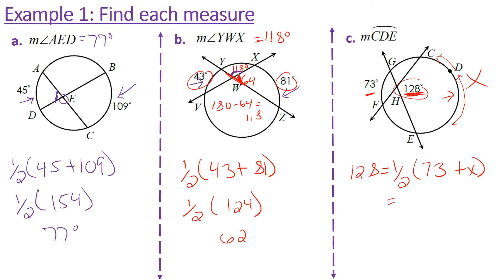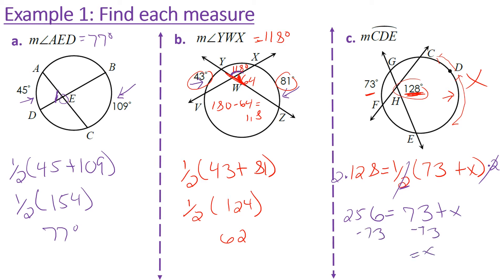To solve, I multiply both sides by two to eliminate the one-half. 128 times 2 is 256. That gives me 256 equals x plus 73. Subtracting 73, x equals 183 degrees. So arc CDE is 183 degrees.